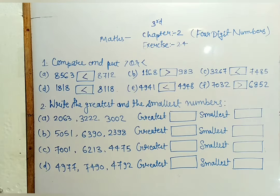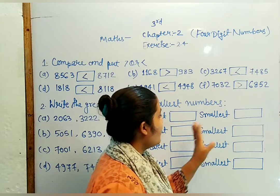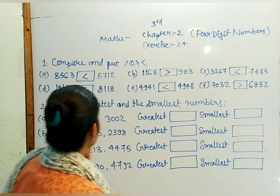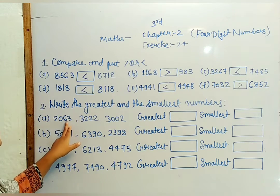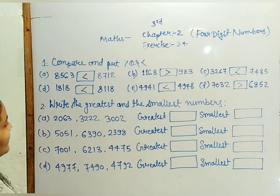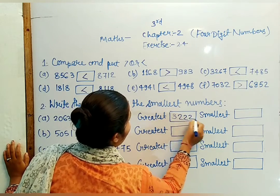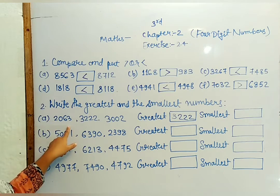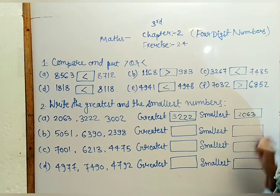Now you can see in the beginning how to compare. This is the greatest number and the smallest number. We have 2,063, 3,222, and 3,002. Greatest is 3,222 and smallest is 2,063.